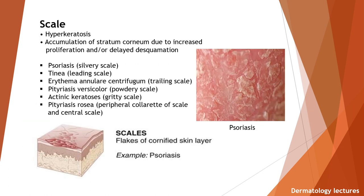Scales are due to hyperkeratosis — accumulation of stratum corneum due to increased proliferation or delayed desquamation. You can differentiate different kinds of diseases by just looking at the scales and their shapes. For example, psoriasis has silvery scales, tinea has leading scales, erythema annulare centrifugum has trailing scales, pityriasis versicolor has powdery scales, actinic keratosis has gritty scales, and pityriasis rosea has peripheral collarette scales and central scale. Here you can see the examples of silvery scales of psoriasis.